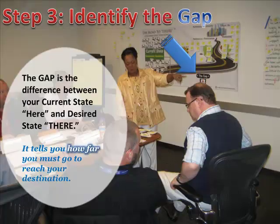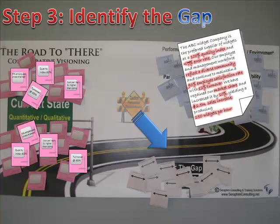Step 3 identifies and clarifies the distance you must go to reach your destination. We call this the gap — the difference between your current state 'here' and your desired state 'there.' Again, brainstorm using the same process and those activity pieces.